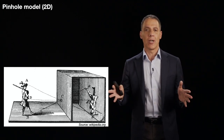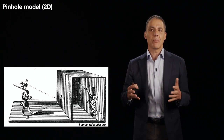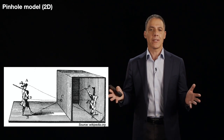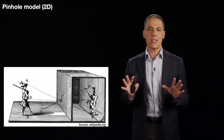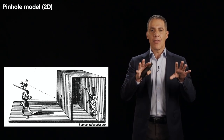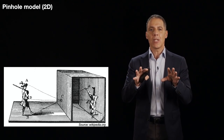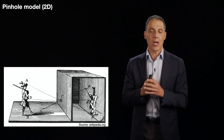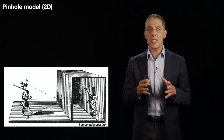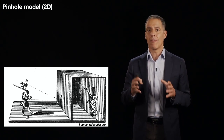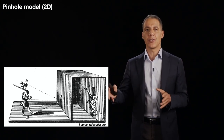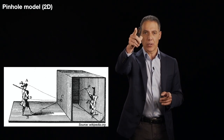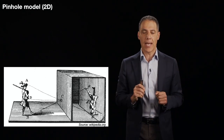The camera obscura is simply a box with a hole in it. And amazingly enough, this simple camera, if you want to call it that, is a pretty good model of a modern digital camera like the one that's recording me right now.